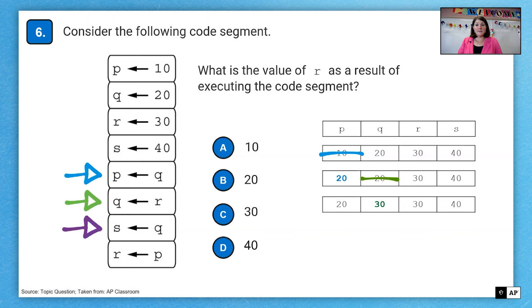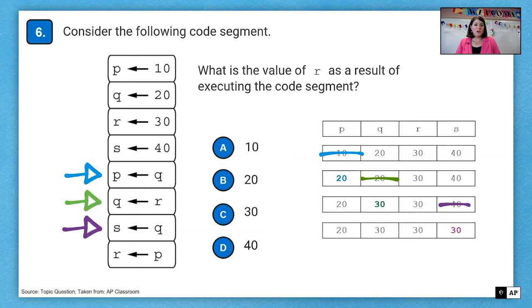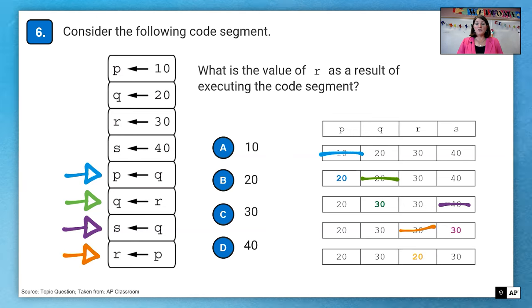Next line, S gets the value of Q. So that means S gets wiped out and assigned the value of Q, which is 30. And our final line, R gets the value of P. So R gets wiped out and is assigned the value of 20. And that is our answer because we want the value of R. So that means our answer is B. So using your scrap paper or your test booklet to write this down is very helpful.